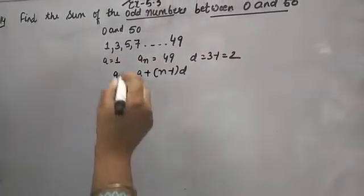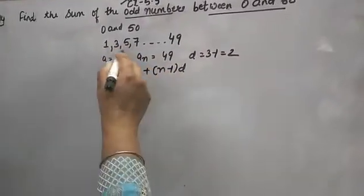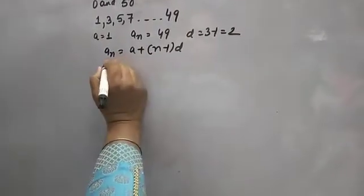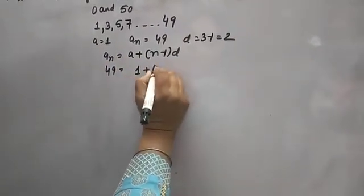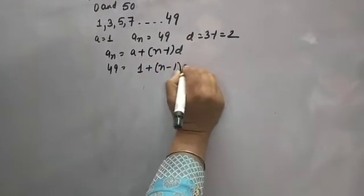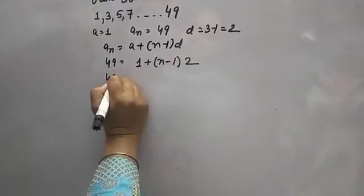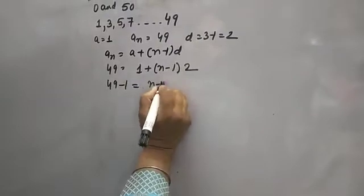5 minus 3 is 2, 7 minus 5 is 2. An is 49, a is 1, as it is, minus 1, d value is 2. So 49 minus 1 is equal to n minus 1 into 2.